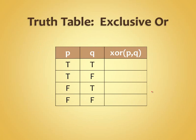Think about how you'd fill this truth table out. XOR of true and true comes back as false. XOR of true and false is true. XOR of false and true is true. And XOR of false and false comes back as false.